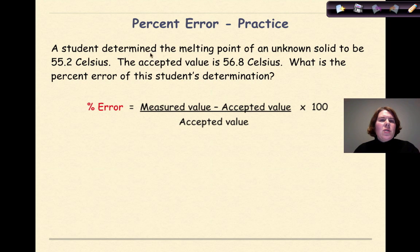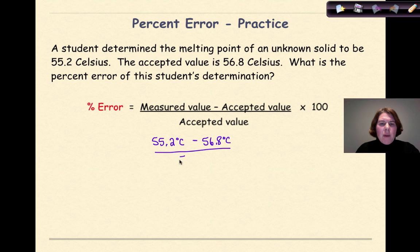Let's do another practice. A student determined that the melting point of an unknown solid to be 55.2 degrees Celsius. The accepted value is 56.8 degrees Celsius. What is the percent error of this student's determination? So here we have our percent error formula, which is percent error equals measured value minus accepted value divided by the accepted value times 100. Let's go ahead and plug our values in. So the measured value here is 55.2 degrees Celsius minus the accepted value, 56.8 degrees Celsius, divided by 56.8 degrees Celsius, and then we're going to multiply it by 100. When we do that, we're going to get negative 2.8169 percent.